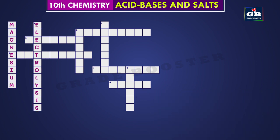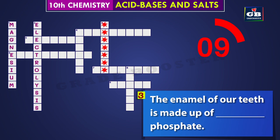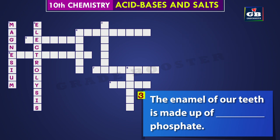Let us see the next one — three down. The enamel of our teeth is made up of dash phosphate. Did you get it? The answer is calcium. The enamel of our teeth is made up of calcium phosphate.